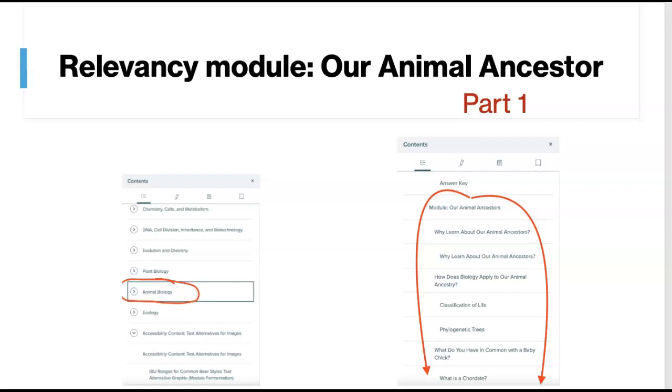Click on that. It's going to open up a whole big list because there's a bunch of different modules in here and you need to scroll down the list until you hit the module that says our animal ancestors. That's where this information will be found.